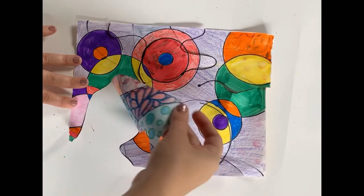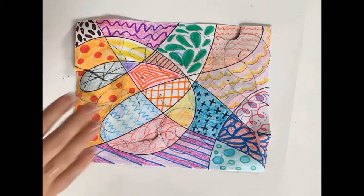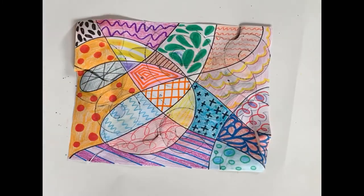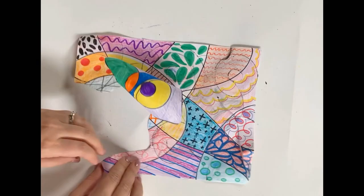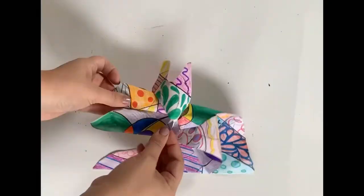Now it's time to make our project three-dimensional. For this step, you'll need tape or glue. Roll each loose section to the middle or opposite side and attach with your tape or glue.